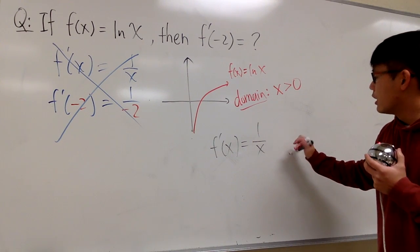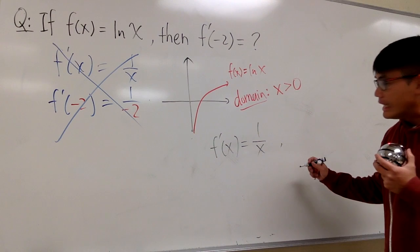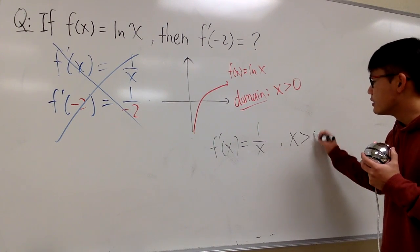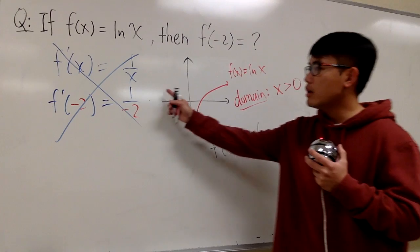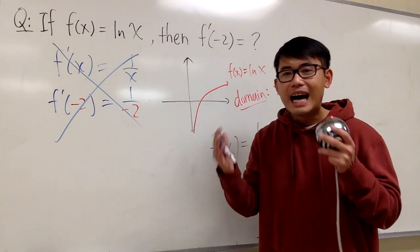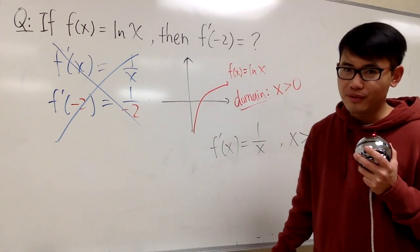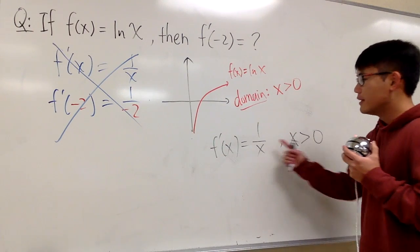1 over x. Be sure, we can only plug in x greater than 0. Because right here, we didn't even have the function. How can we even have the derivative? So, this is the idea.